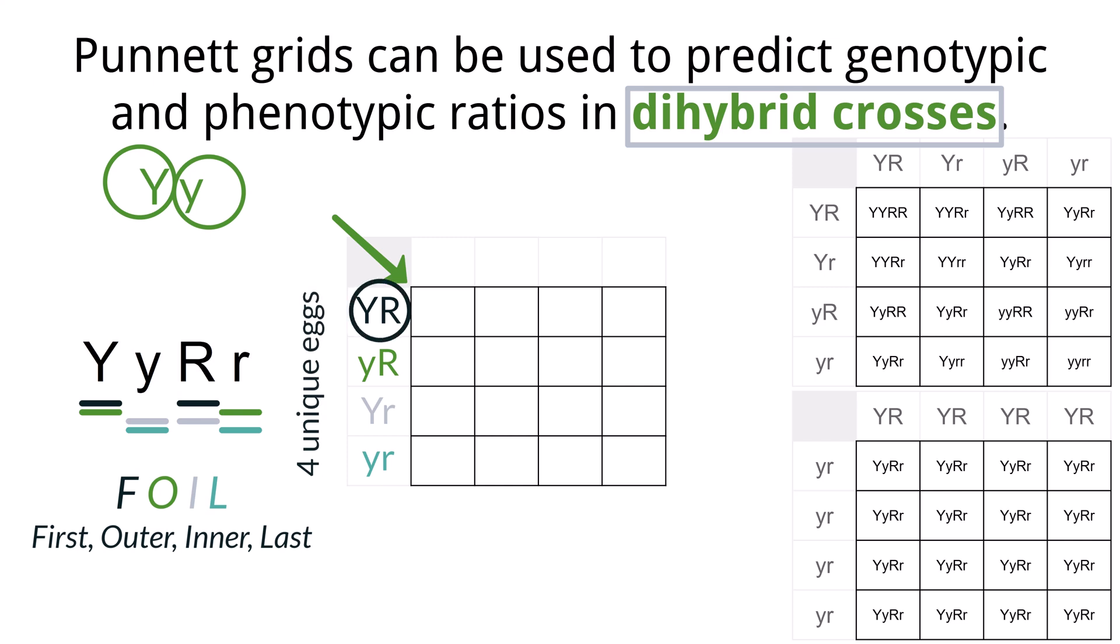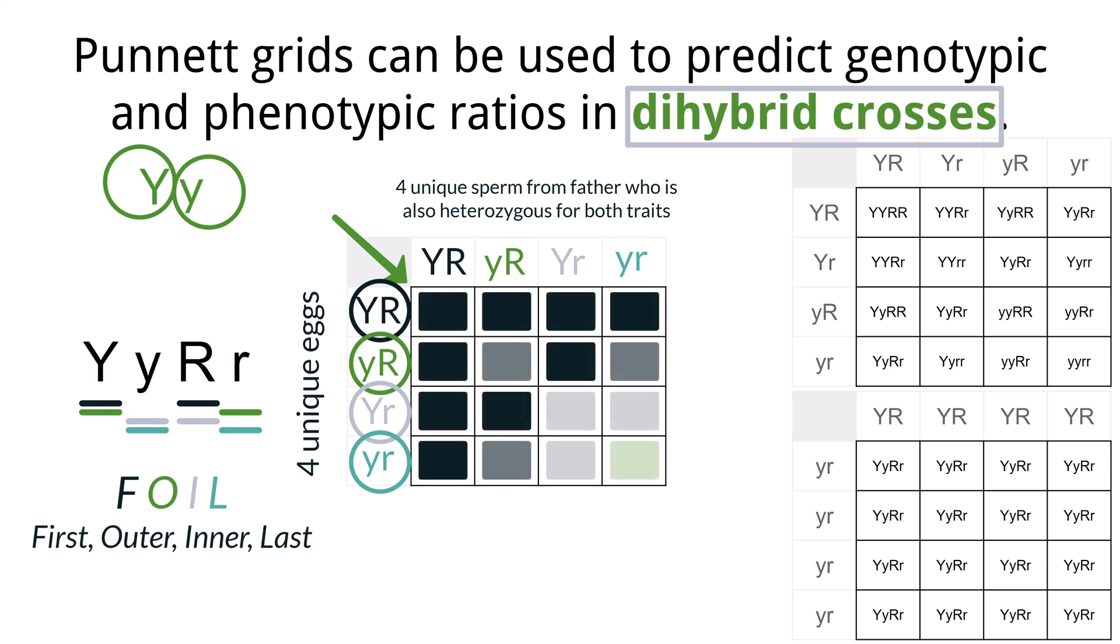Uppercase R, uppercase Y. Uppercase R, lowercase y. Lowercase r, uppercase Y. And lowercase r, lowercase y. Mendel did thousands of tests and found this 3 to 1 ratio in a monohybrid cross and 9 to 3 to 3 to 1 ratio in a dihybrid cross.